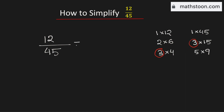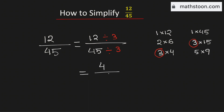And to simplify this fraction, we need to divide both the numerator and the denominator by their greatest common factor, which is 3. And by doing so, we will get 4 in the numerator and 15 in the denominator.